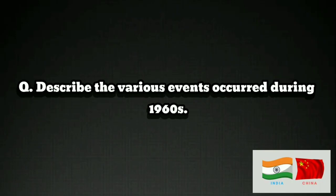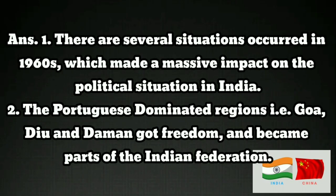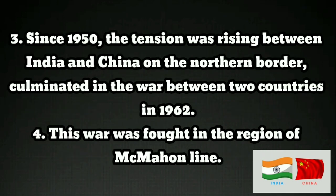Question 4: Describe the various events that occurred during the 1960s. Answer: There are several situations that occurred in the 1960s which made a massive impact on the political situation in India. The Portuguese-dominated regions - that is, Goa, Diu and Daman - got freedom and became parts of the Indian Federation. Since 1950, tension was rising between India and China on the northern border, which culminated in war between the two countries in 1962.